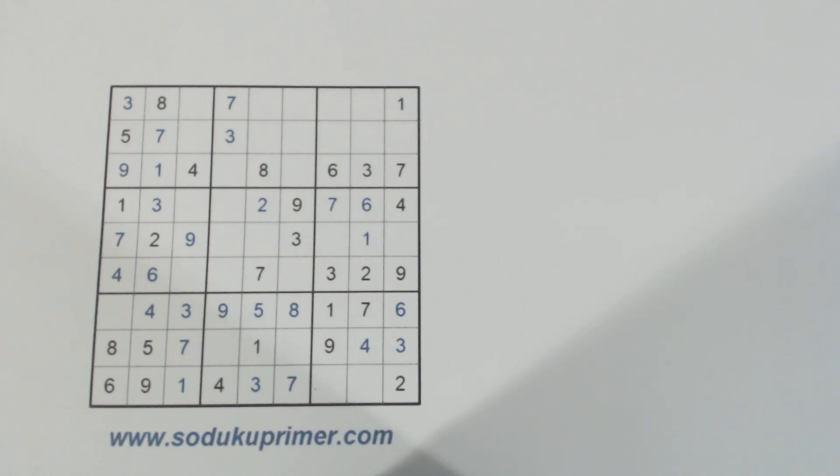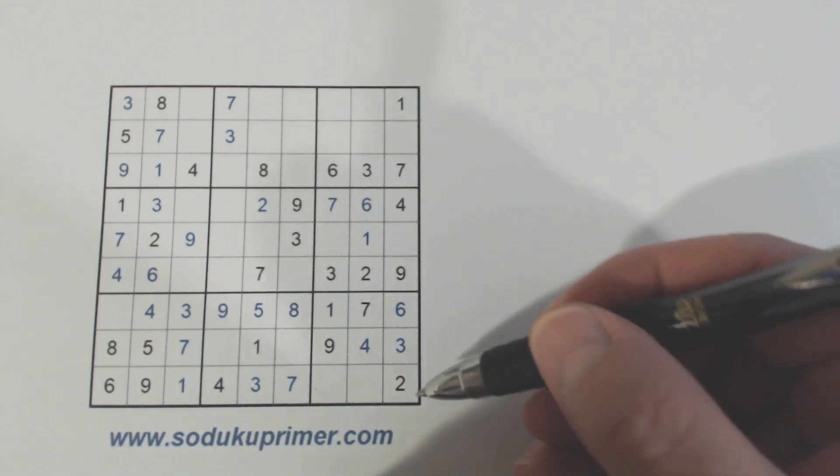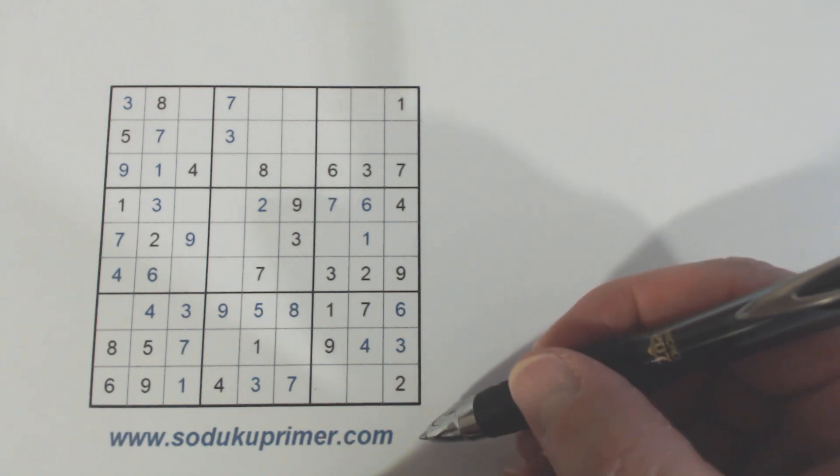In this video we're going to only cover one concept. I'm not going to solve the entire puzzle. I'm going to talk about the ambiguity rule or unique rectangles. If you're not familiar with that concept, go to sudokuprimer.com and look in the techniques section and you'll see a write-up about the ambiguity rule.